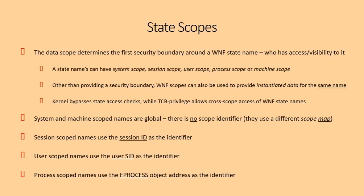The second piece of a state name is its scope, which determines the initial security and visibility boundary around a WNF state. A WNF state name can be global, unique to a session, unique to a user, or unique to a process. Lifetime and scope go hand in hand — for example, you couldn't create a permanent name that is process-scoped, because once your process is gone, no one will ever be able to open that name again.